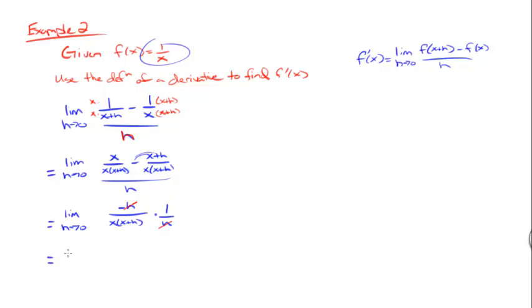Usually after you cancel out that h, the limit is easy to take. Let's see if that is the case here. I'm going to get negative one over x times x plus h. And now I can use direct substitution because I don't have any domain issues when I plug in zero. So I'm going to use direct substitution here. And so what this limit becomes is negative one over x times x plus zero, which simplifies down to negative one over x squared.